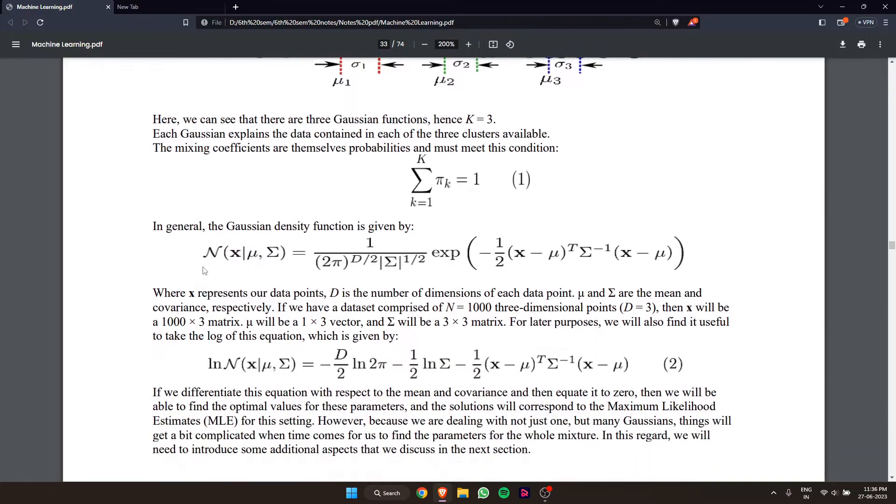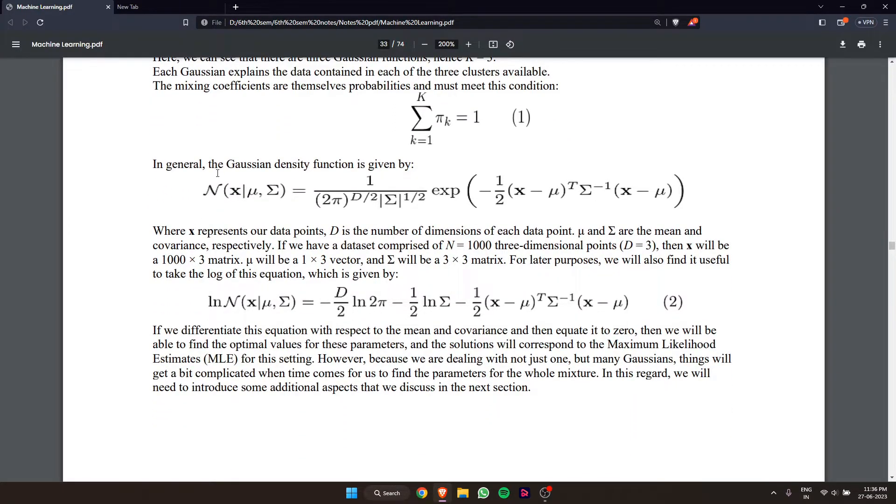In general, the Gaussian density function is given by this equation. If we differentiate this equation with respect to the mean and covariance and then equate it to zero, we will be able to find the optimal values.